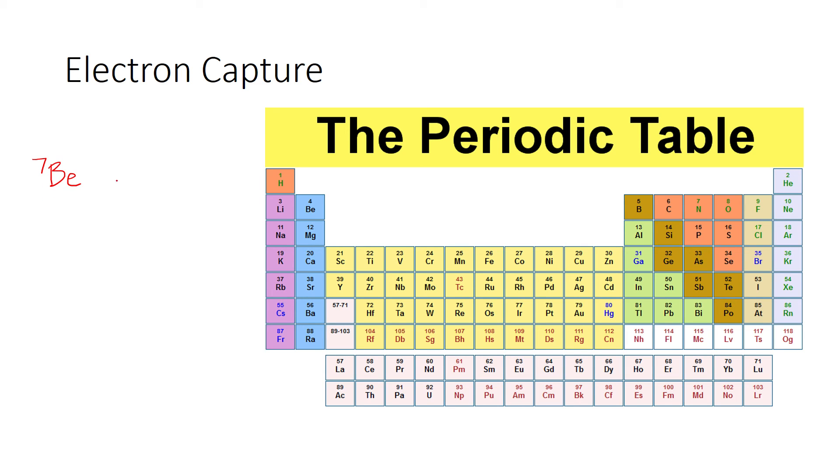Here, as you can see, the atomic number is 4. It's going to capture an electron. 0 and negative 1 on the bottom. 7 and 0 is 7. 4 and negative 1 is 3. So as you can see, this thing gets turned into a lithium.